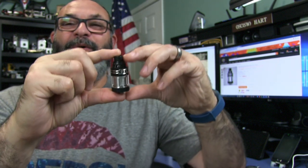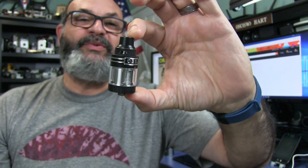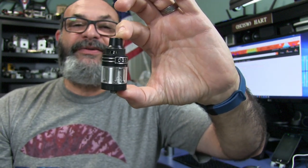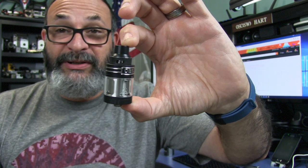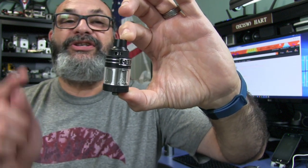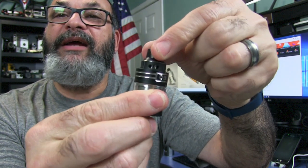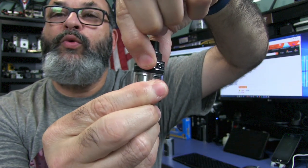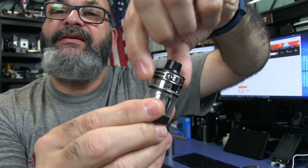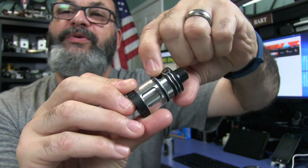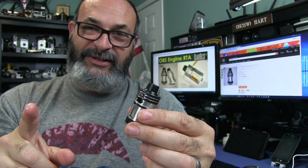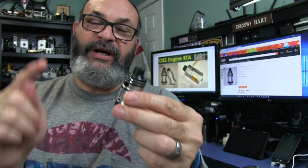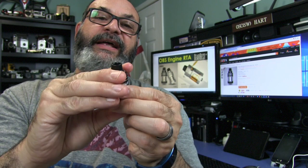So what is this tank and why is it special? Well, this is a velocity style RTA with 5.2 milliliters of capacity. It has adjustable top air flow and it has a side fill. I will never, at this point, review another RTA that does not have top air flow.